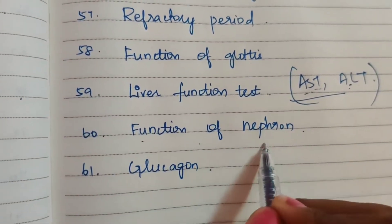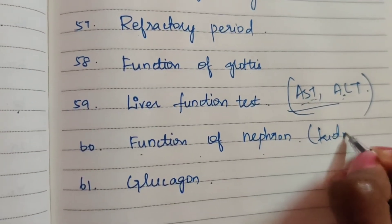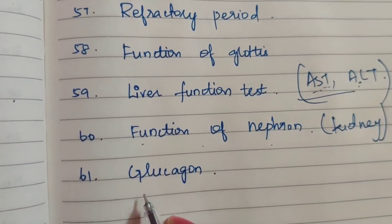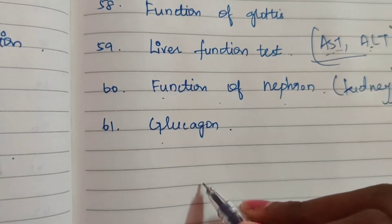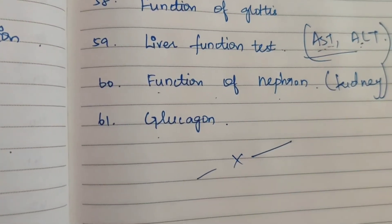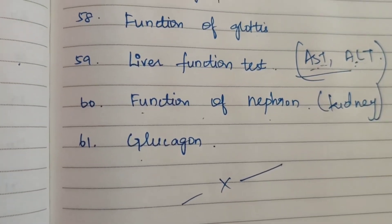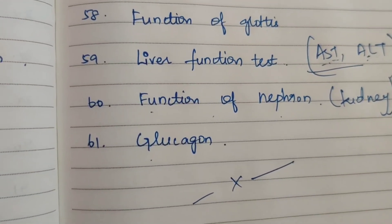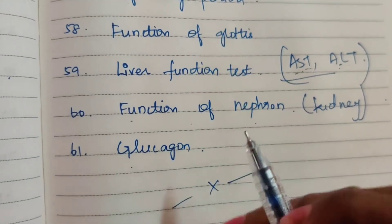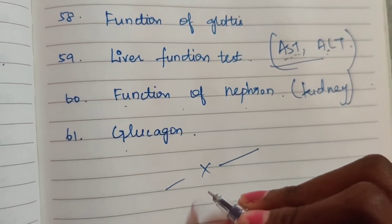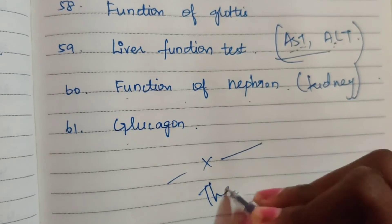Function of nephron and kidney function — you can study these together. Sixty-first: glucagon. This completes the topic list. Please leave suggestions and topic requests in the comments section. Thank you.